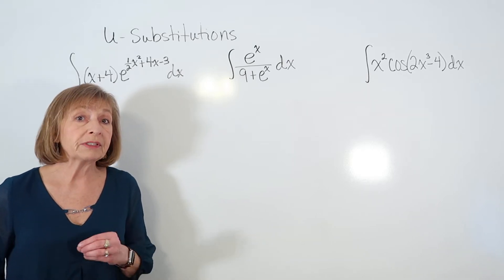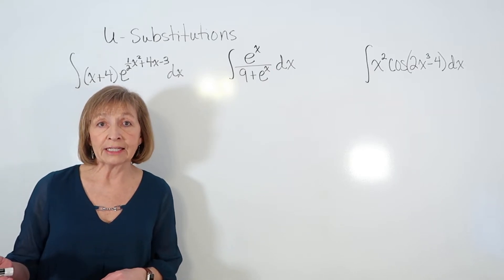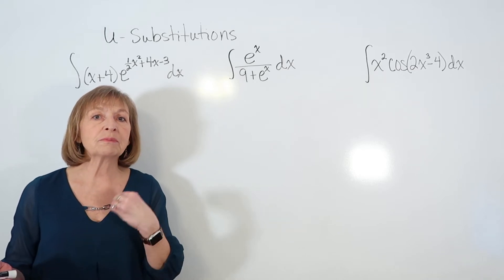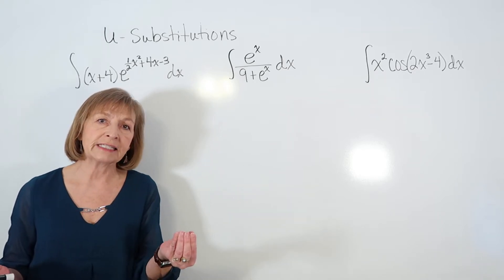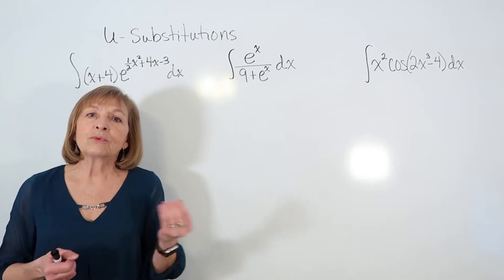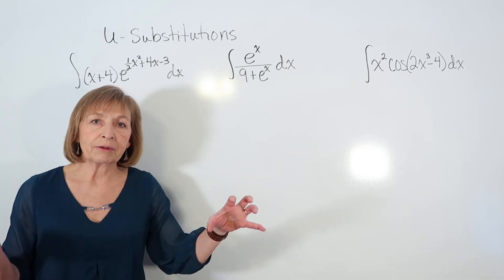Remember when we were differentiating a composite function, we took the derivative of the outside action, leaving the inside expression the way it is, and then we multiplied by the derivative of the inside expression, applying the chain rule. And when we did that, that gave us the derivative of our composite function.